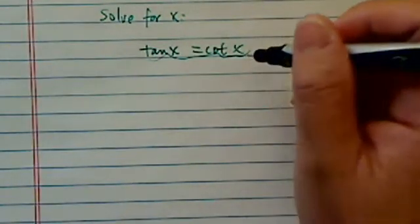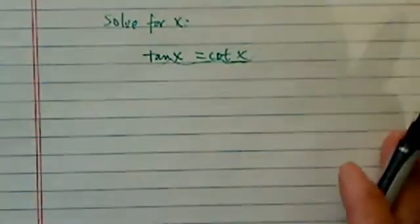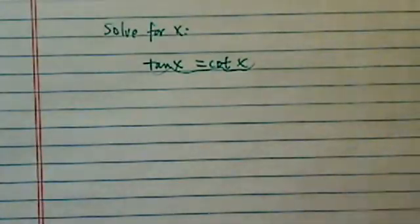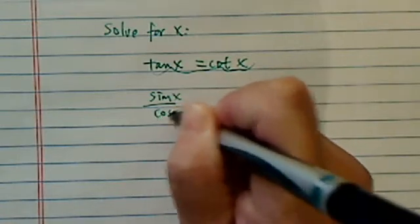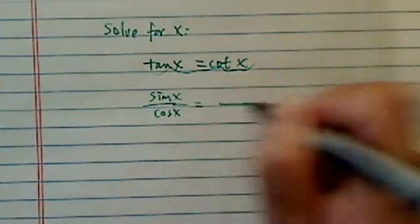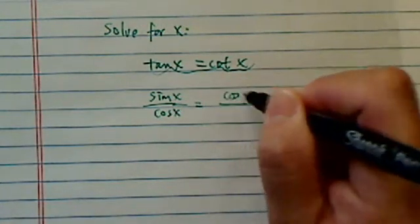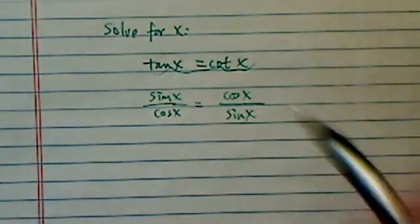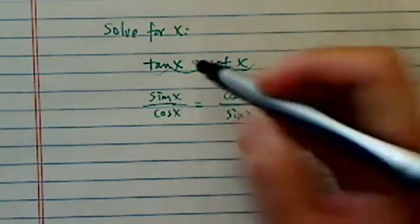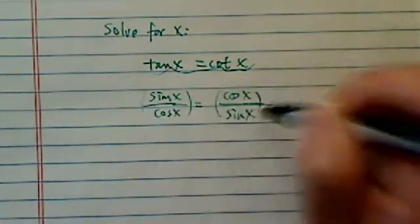Tangent of x equal cotangent of x. All sorts of those problems that involve trig function, really what they're looking for is have you written into some sort of quadratic formula, a quadratic equation here. So what I've done here is I've basically expressed the tangent and cotangent in their base function, which is sine and cosine.